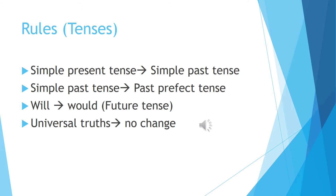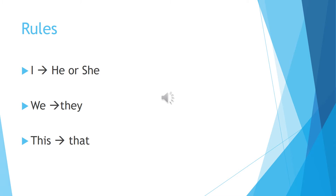Universal truths do not change. Please remember these rules while changing from direct to indirect speech. There are more rules for changing from direct to indirect speech. 'I' becomes 'he' or 'she' depending on the subject, whether it is masculine or feminine gender. 'We' changes to 'they', and 'this' changes to 'that'. All these things, along with the tenses, should be in your mind when changing to reported speech.